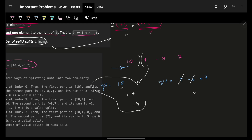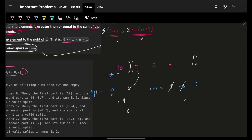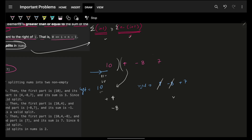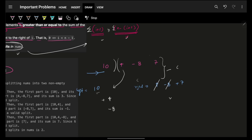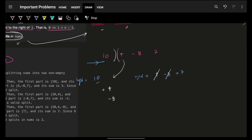This suggests maintaining a prefix sum and suffix sum array, which I've covered in a previous video linked in the description. With prefix and suffix sum arrays, I can easily look up the prefix sum and suffix sum at any index and check if prefix sum ≥ suffix sum. However, that approach uses O(n) extra space for two arrays. Instead, I only need the total sum: in the very beginning, total sum = 4 - 8 + 7 + 10, and as I iterate I update left sum and right sum from it.